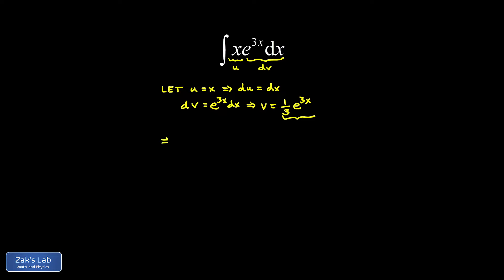So now we apply the integration by parts formula, and I get u times v for my first term. That's 1 third x e to the 3x. Then I have minus the integral of v du. So v is 1 third e to the 3x, and du is just dx. And we can move the 1 third out in front. And I have the integral of e to the 3x dx.